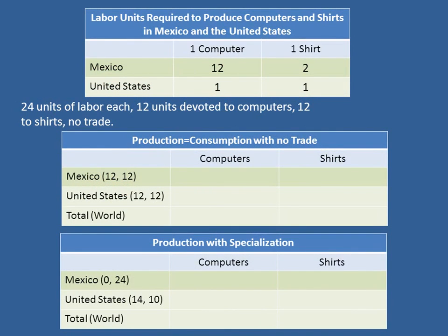So, remember our basic data is in the top figure right here. We want to answer: suppose there are 24 units of labor, 12 devoted to computers and 12 to shirts. How many computers and shirts in Mexico? If Mexico devotes 12 units of labor to producing computers, and it takes 12 units of labor to produce one computer, then you get one computer. In Mexico, it takes two units of labor to produce one shirt, so if you devote 12 units of labor to shirt production, you get six shirts.